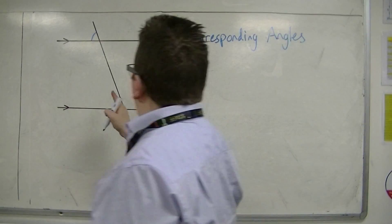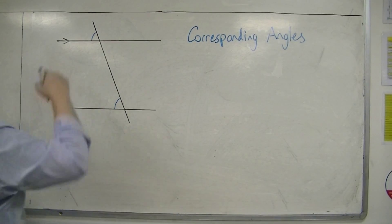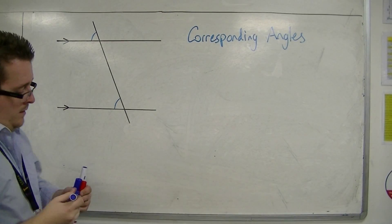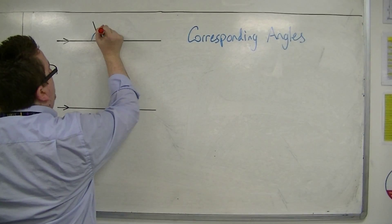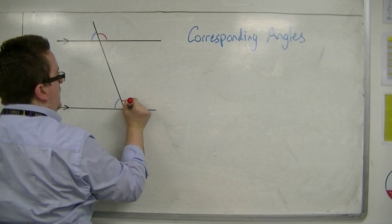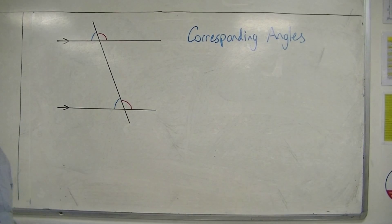So if this angle is 70 degrees, then that angle is 70 degrees. But that's not all the corresponding angles that are there. If you measure these two, then these two are also corresponding.